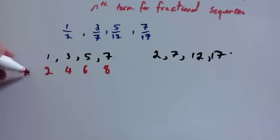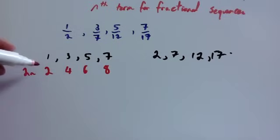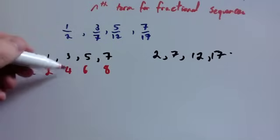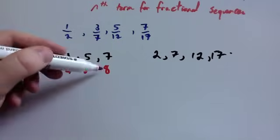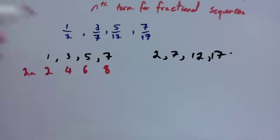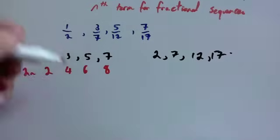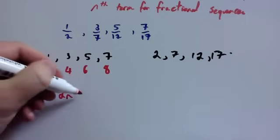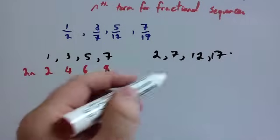That's two n, the two times tables. To get from two to one, four to three, six to five, and eight to seven, you subtract one each time. So the numerators have an nth term of two n minus one.